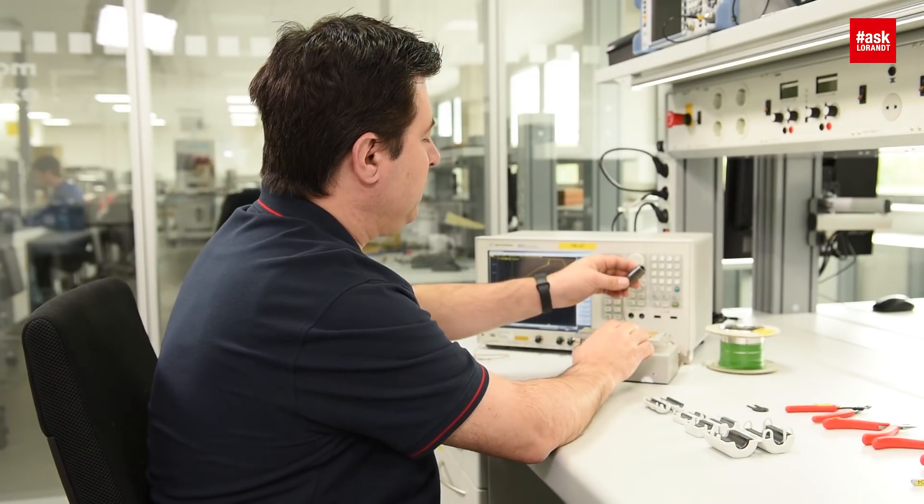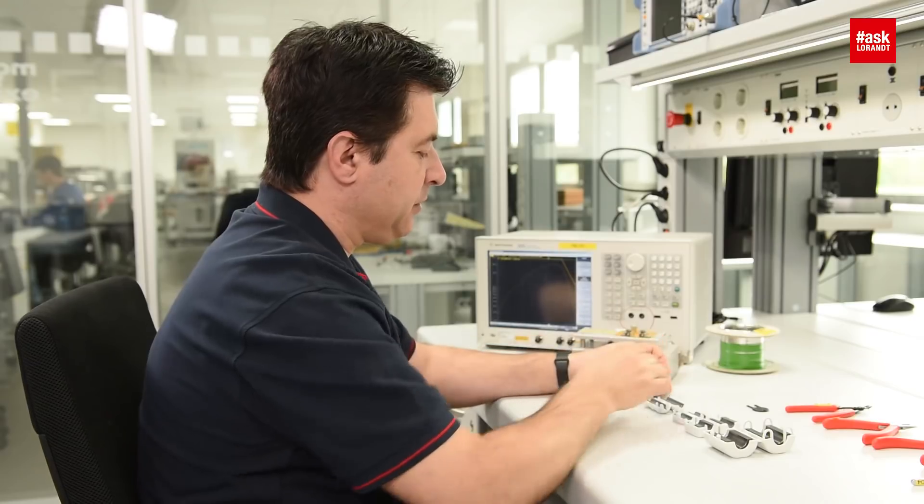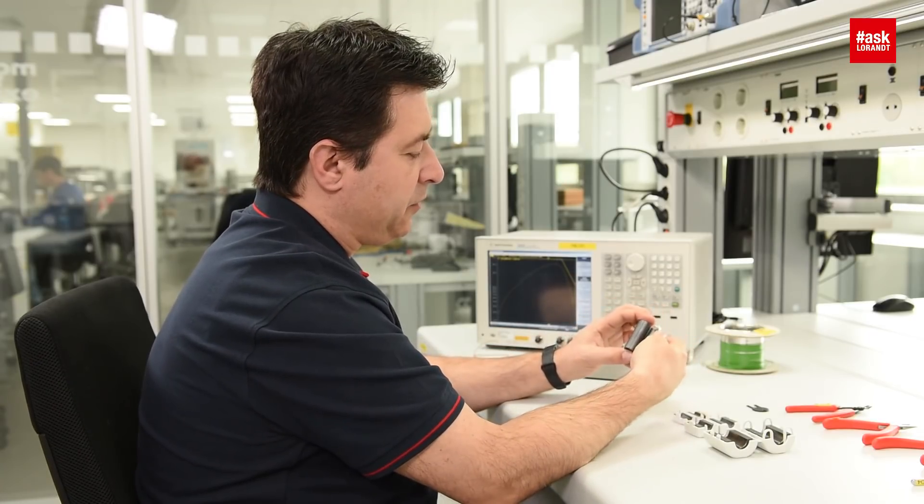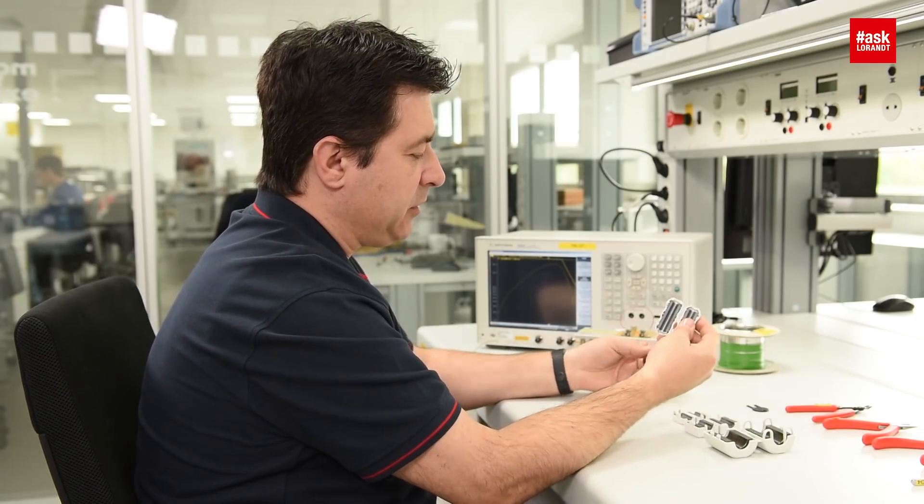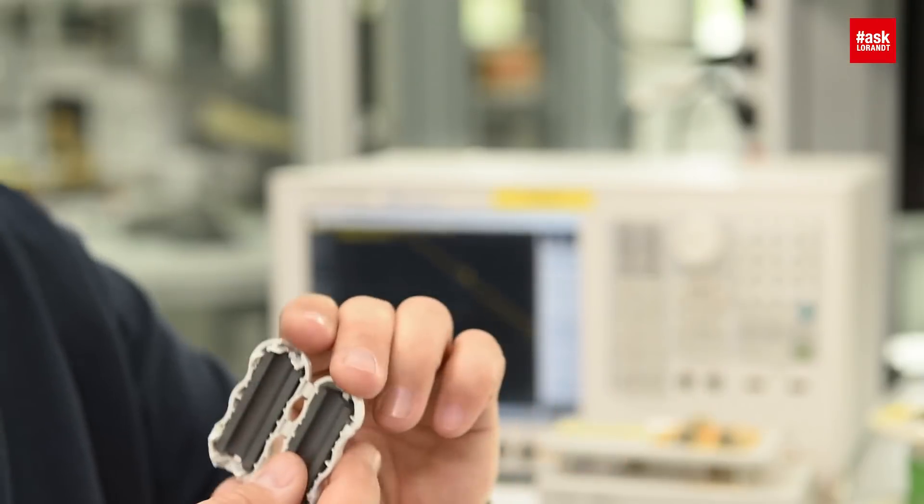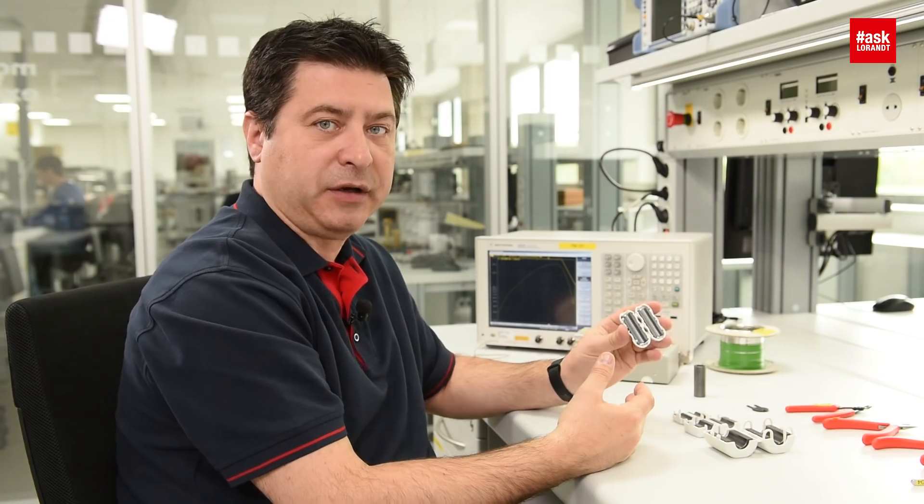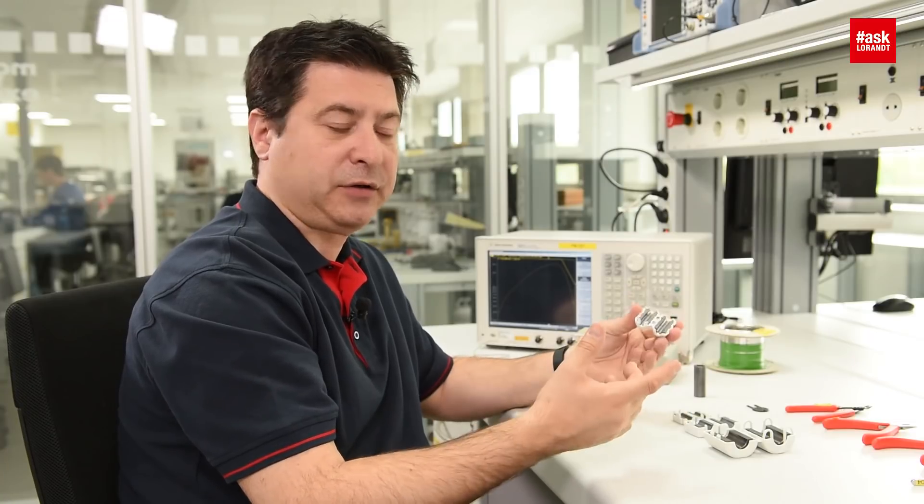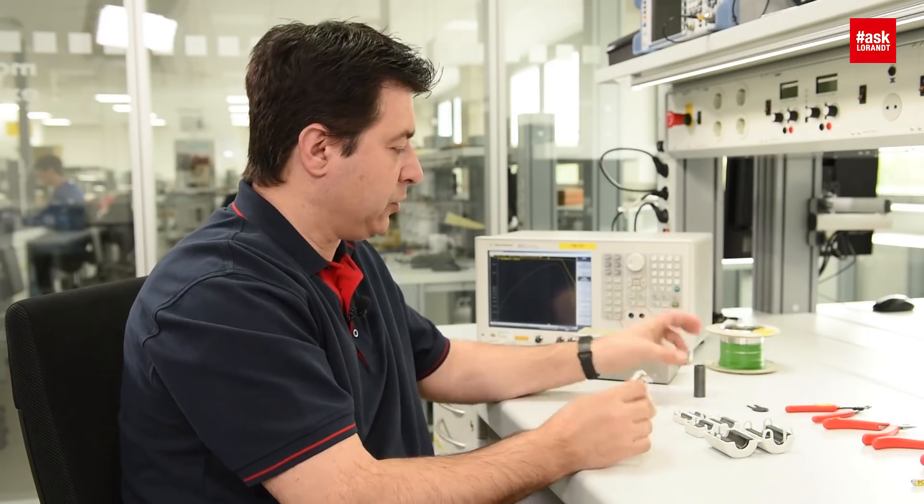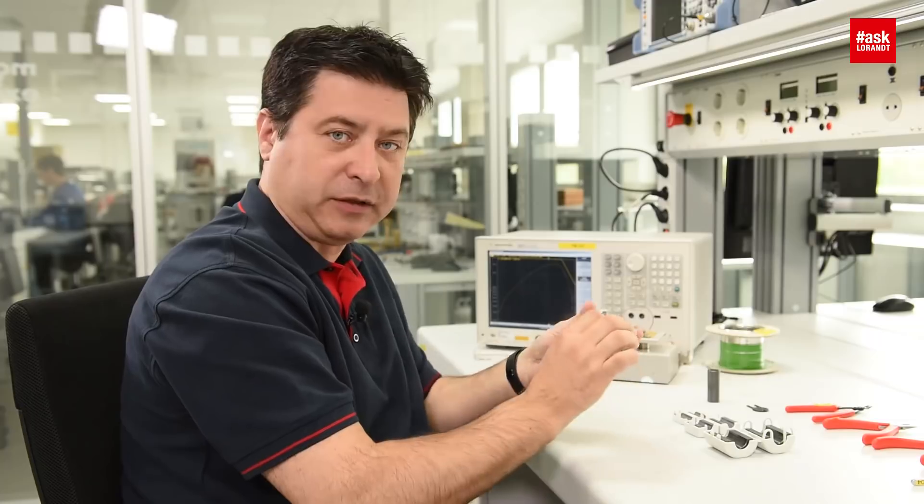And for the same size and the same wire thickness, I have now a split ferrite. It is the same material, just the only difference is the splitted one. Because sometimes you have already the cable done and you have the connector, you cannot put the connector through this hole, so you will need a splitted one.